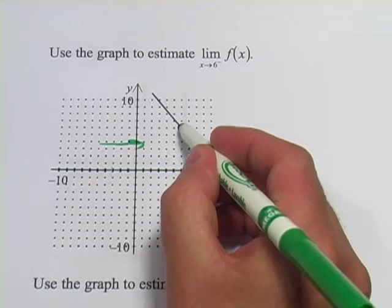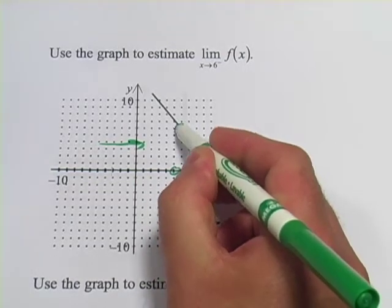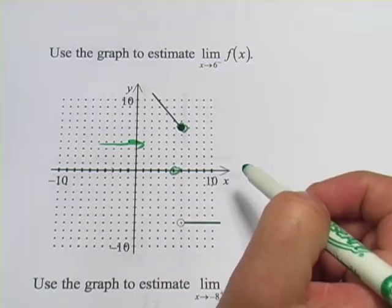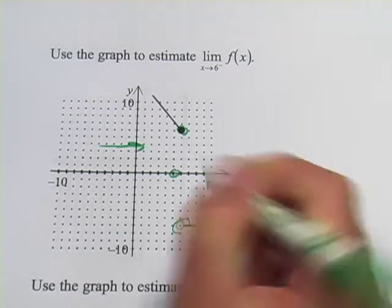Well, here is 6, x equals 6 right there, and it looks like the function is approaching that value right there. Now, if you tried this limit from the other side, you'd get a very different value, this value here.